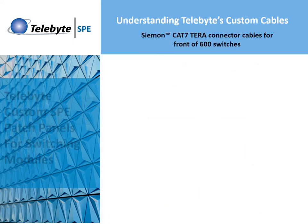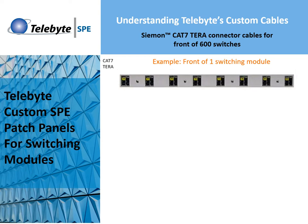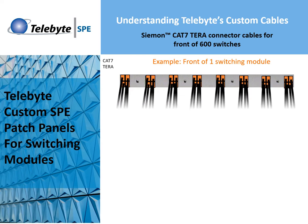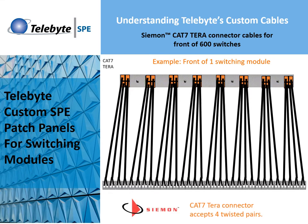The 600 switching modules utilize a SIEMAN CAT 7 Terra connector that accepts four twisted pairs. Each cable has one CAT 7 Terra connector on the 600 switch side and four SPE pairs on the other, connected to a 32 port SPE patch panel. Telebyte offers custom cabling to meet your needs.